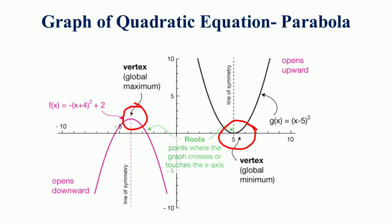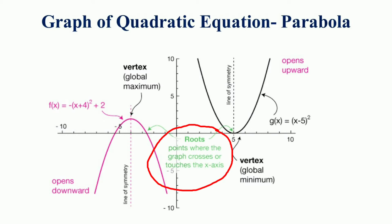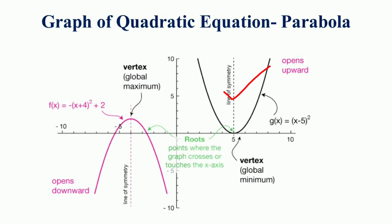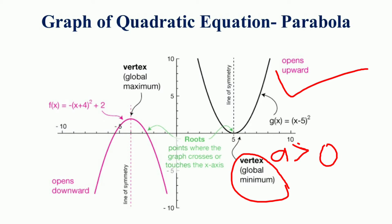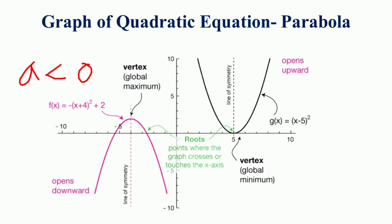The vertex of a parabola can be anywhere in the x-y plane. The roots of the quadratic function are the points where it crosses the x-axis, where f(x) = 0. The parabola looks like an inverted U-shape when the coefficient a is less than 0, and like a U-shape when a is greater than 0. If a is positive, the parabola has a minimum and opens upward; if a is negative, the parabola has a maximum and opens downward.